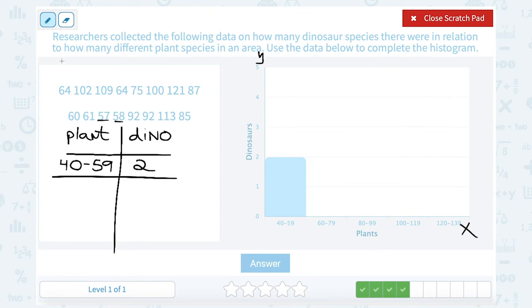Now I want to see how many points from my data are between 60 and 79. Okay, so that's 1, 2, 3, 4, 5. Okay, so between 60 and 79 there were 5 dino species.